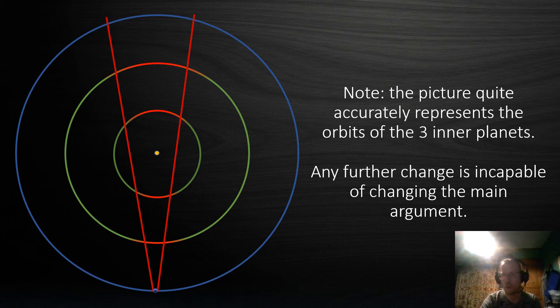Now of course there are details worth considering when making this kind of a diagram. Let's say the orbits of Mercury, Venus and the Earth in relation to each other and their respective distances from the Sun. Now Mercury happens to be roughly 50 million kilometers from the Sun. Venus would be roughly 100 million kilometers from the Sun and the Earth 150 million kilometers from the Sun, roughly speaking.